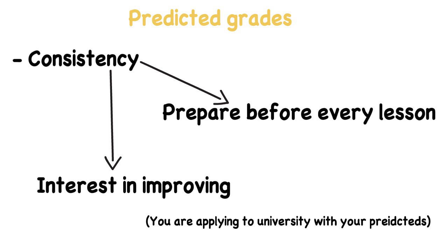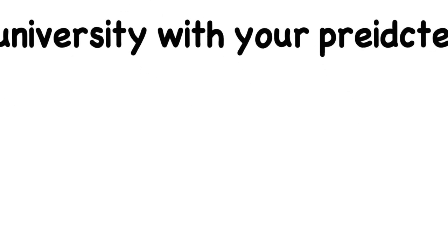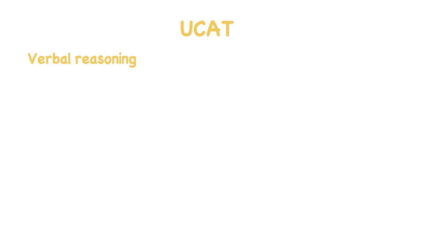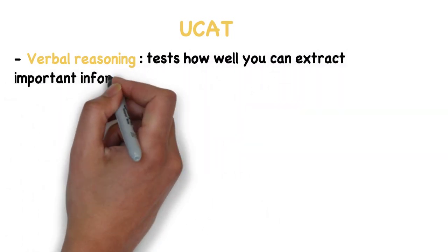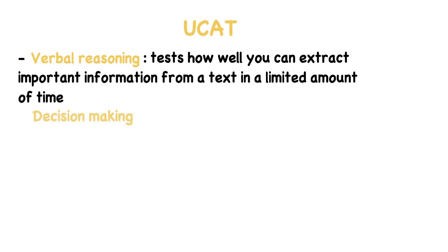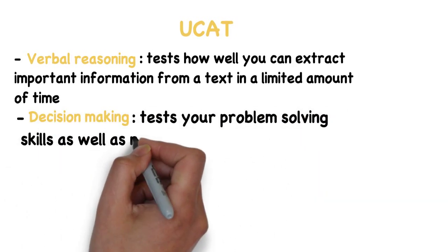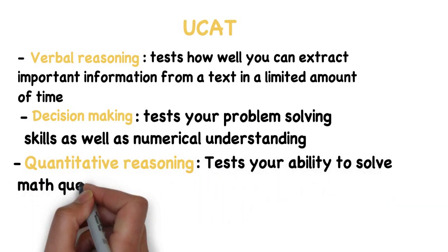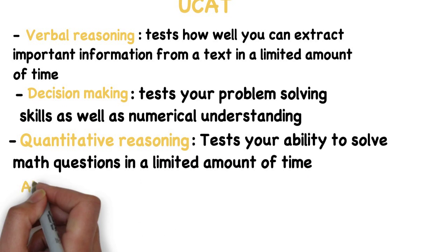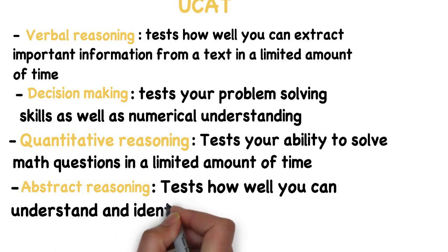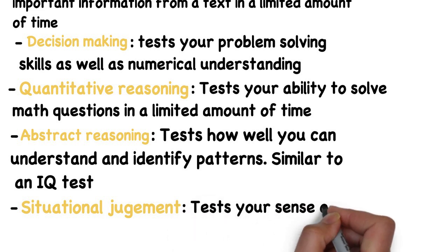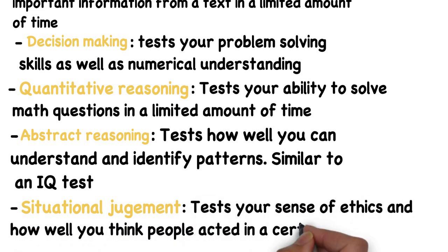The UCAT and the BMAT are tests which you need to do, which are exclusive to medicine. We, personally, took the UCAT. The UCAT is divided into five areas. Verbal Reasoning, which tests how well you can extract information from a text in limited amount of time. Decision Making, which tests your problem-solving skills, as well as numerical understanding. Quantitative Reasoning, which tests your ability to solve math questions in a limited amount of time. Abstract Reasoning, which tests how well you can understand and identify patterns, similar to what you do in an IQ test. And also Situational Judgment, which tests your sense of ethics and how well you think people acted in a certain situation.